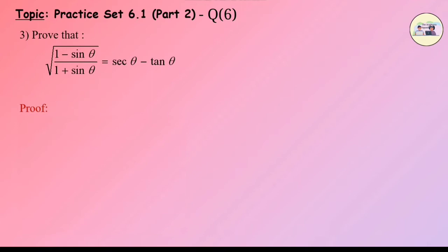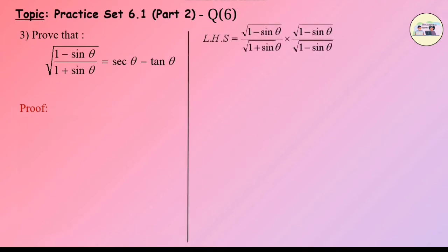Proof: The denominator of the LHS is √(1 + sinθ). Therefore we need to multiply the LHS with its conjugate, i.e. √(1 - sinθ). LHS = √(1 - sinθ)/√(1 + sinθ) × √(1 - sinθ)/√(1 - sinθ), which equals (1 - sinθ)/√(1 - sin²θ).